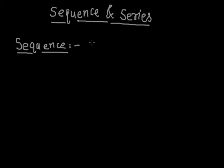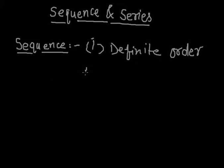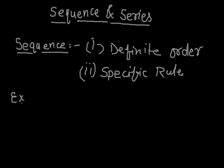We have to understand two things: first one is definite order and next one is specific rule. Now see, let's have an example to describe this one. We have 2, 4, 6, 8, 10 and so on.